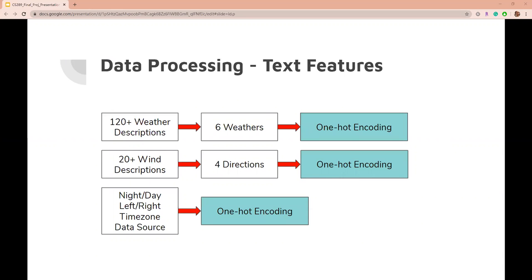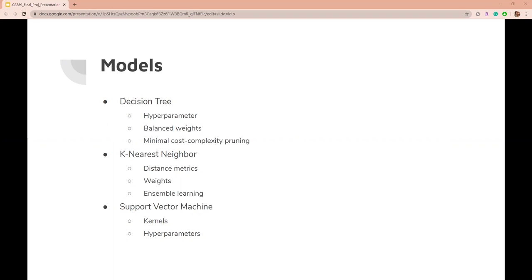The original dataset we start with contains both numerical and text features. We simplify text into keywords and convert them using one-hot encoding. With the pre-processed data, we apply decision tree, KNN, and SVM with different hyperparameters and metrics to predict.